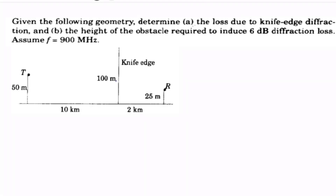Now let us see our first problem. Given the following geometry, determine the loss due to knife-edge diffraction — that means find gain Gd. Part two: find the height of the obstacle needed to induce 6 dB loss.